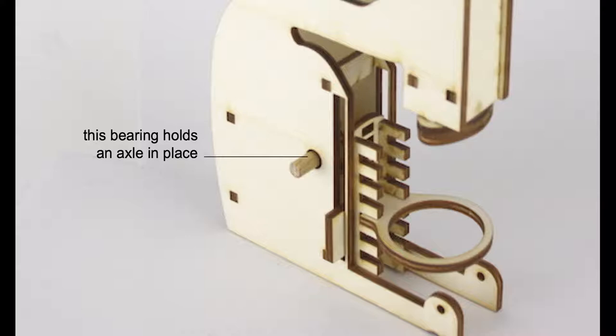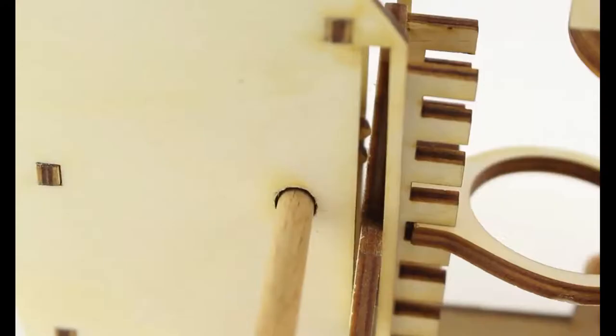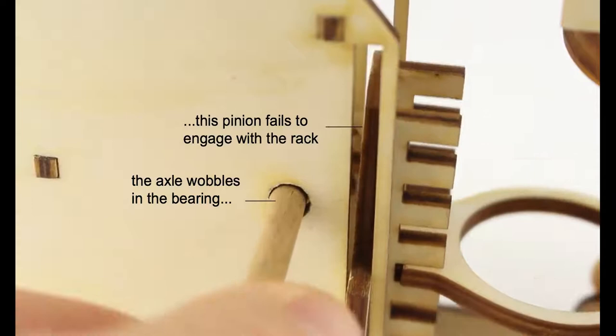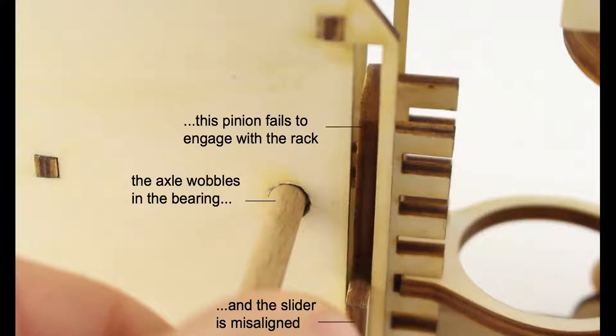This tuning, however, tends to get lost when somebody fabricates the same model on a different machine. Let's look at what happens when we add more kerf. The axle wobbles in the bearing, which causes the pinion to fail to engage with the rack, and the slider to misalign as a result.